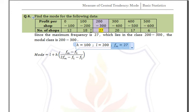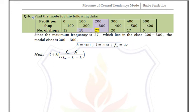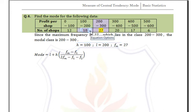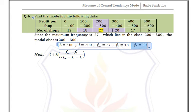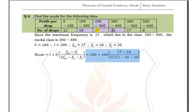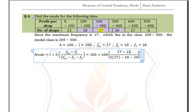F1, the frequency preceding the maximum frequency, is 18. F2, the frequency succeeding the maximum frequency, is 20. Substituting all values into the formula and simplifying, mode is equal to 256.25.